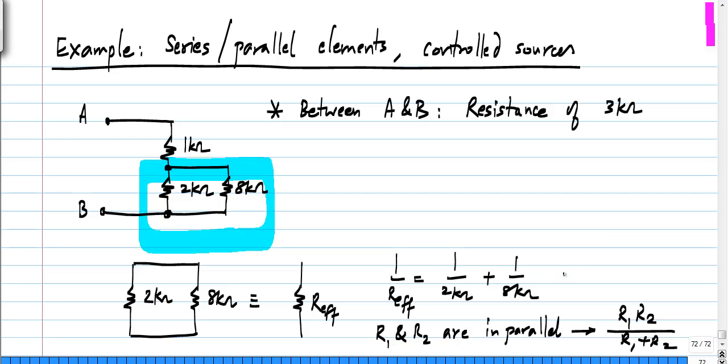If you calculate this in this case, R effective turns out to be 1.6 kilo ohms. So this entire combination equals 1.6 kilo ohms and in series with that we have this 1 kilo ohm.